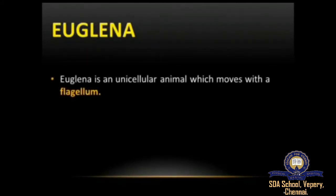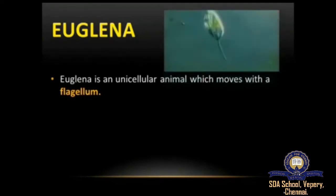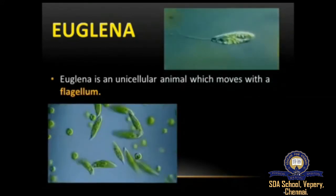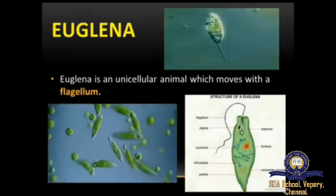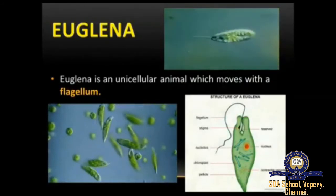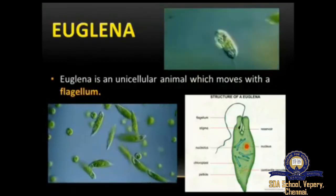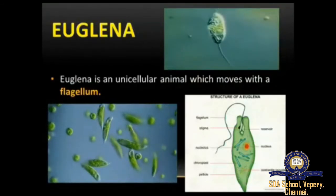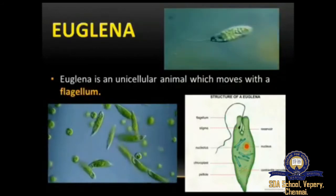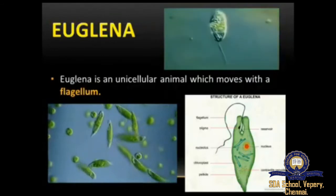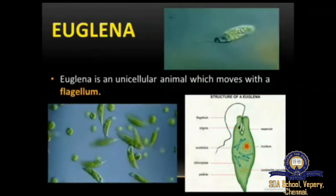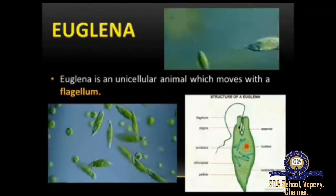The last unicellular organism is euglena. Euglena is also a unicellular animal which moves with the help of a flagellum. From the picture you can see that euglena has a contractile vacuole which helps in excretion. At the top there is a hair-like structure called the flagellum, which is used in movement — making euglena move from one place to another. That's it for today's class; now let's do a recap.